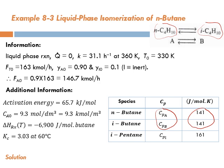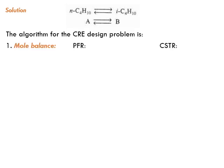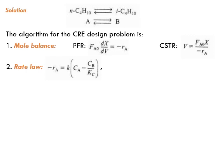So let's solve this problem. Let's go through the design algorithm and start collecting the equations. The algorithm for the CRE design problem is the mole balance. This is for plug flow reactor: dX/dV equals minus rA over FA0. And this is for CSTR: V equals FA0 X over minus rA. All written in terms of conversion because conversion is my preferred variable here. Then we write the rate law. The reaction is reversible, can be assumed elementary since no other information is given. So minus rA equals k times CA minus CB divided by Kc.